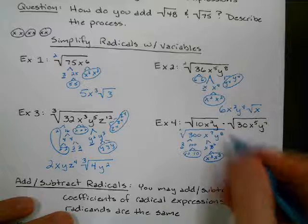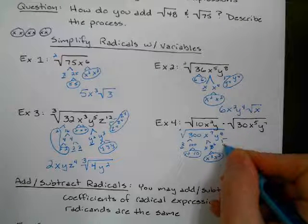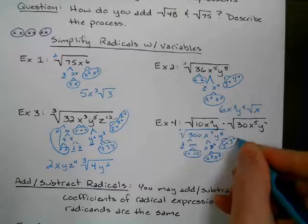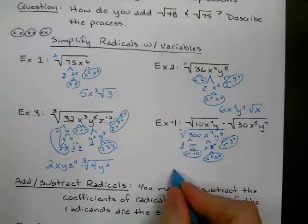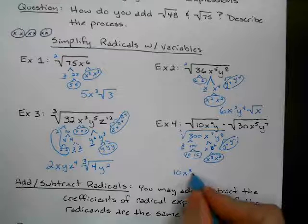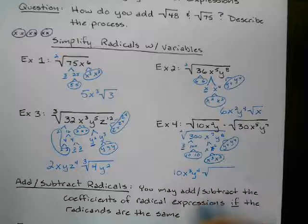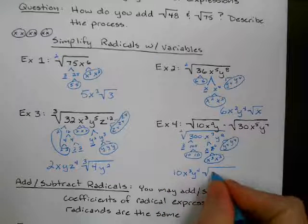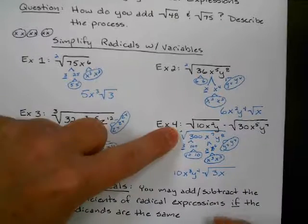And then 2 does go into 8. So that's y to the fourth and y to the fourth. So I got a pair of y to the fourths. Okay, what came out? The 10 did. The x to the third did. The y to the fourth did. What did not come out of the radical? 3 and x. And since I started with the square root, I'm ending with the square root there.